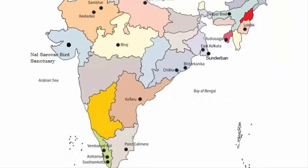In Andhra Pradesh, we have Kolleru Lake. In Tamil Nadu, Point Calimere Wildlife and Bird Sanctuary. In Kerala, we have Ashtamudi Wetland, Sasthamkotta Lake, and Vembanad Kol Wetland — which is the largest wetland of India.